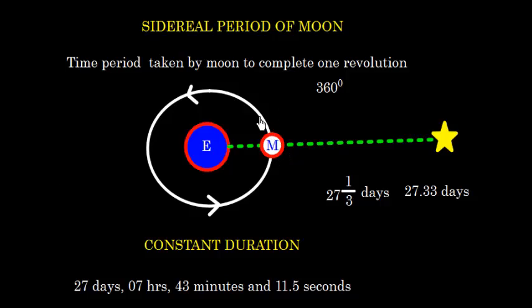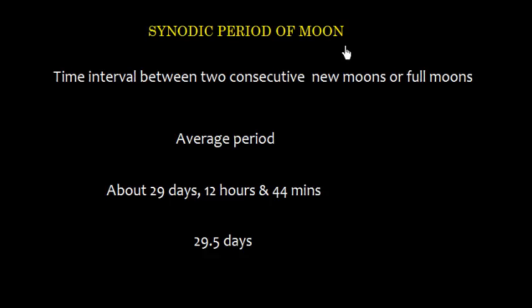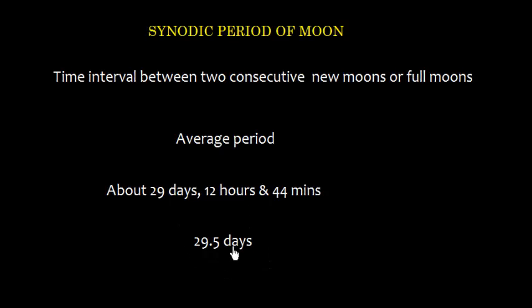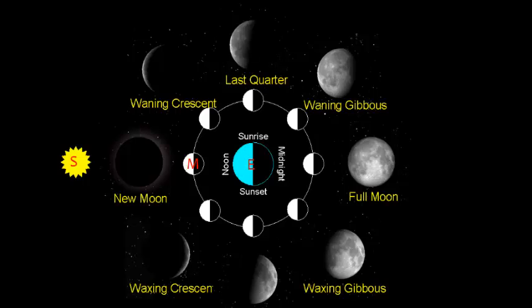The synodic period of the Moon is the time interval between two consecutive new moons or full moons. This has an average period of about 29 days, 12 hours, and 44 minutes, or approximately 29.5 days.